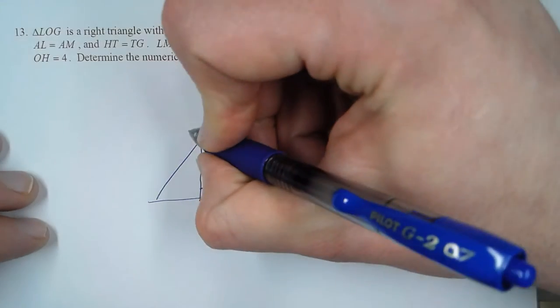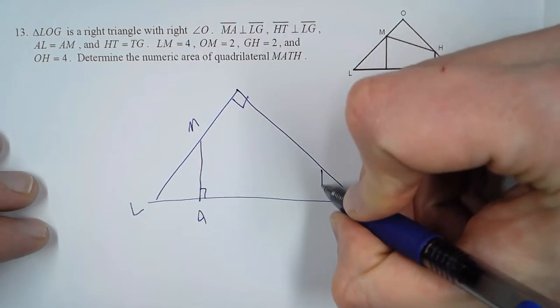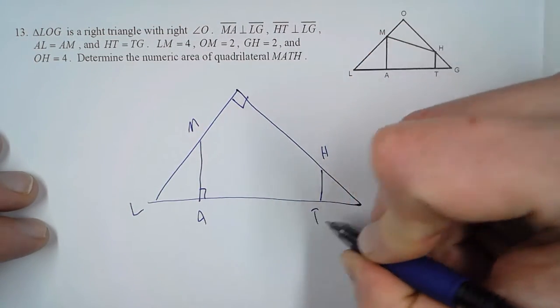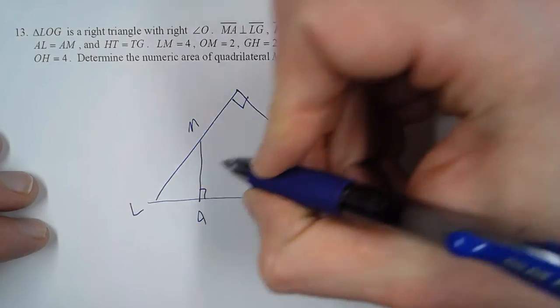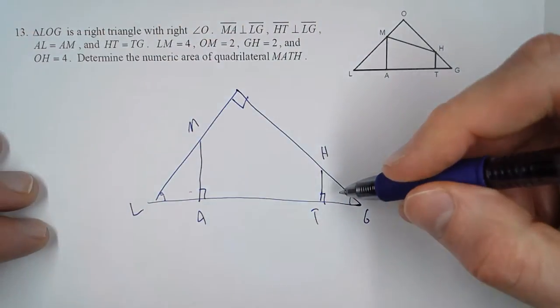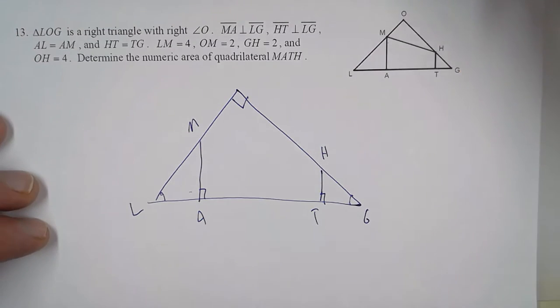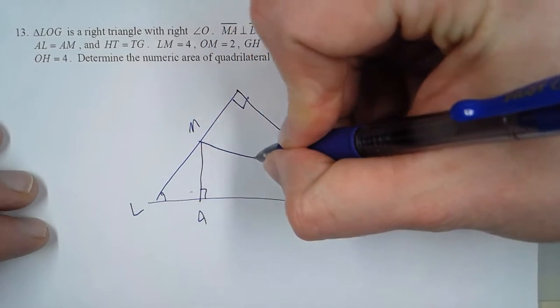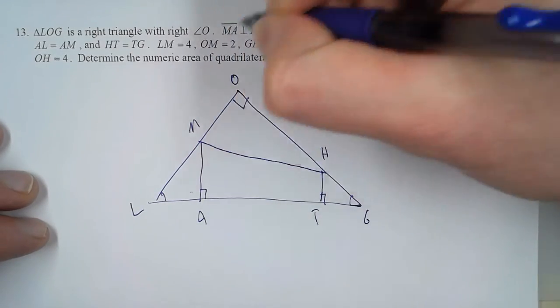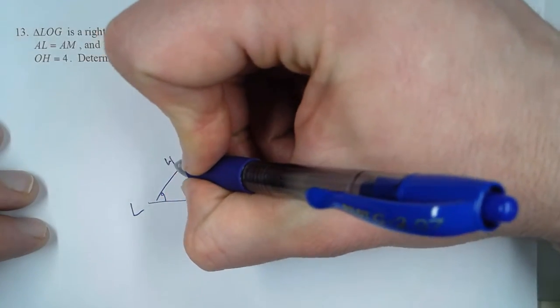So here's M, here's A, here's L, here's H, here's T, and here's G. These are also right triangles, but they share this angle right here, which means these are also 45-45-90 right triangles as well. All right, so here's O, so this is 4, and this is 2, and this is 4.